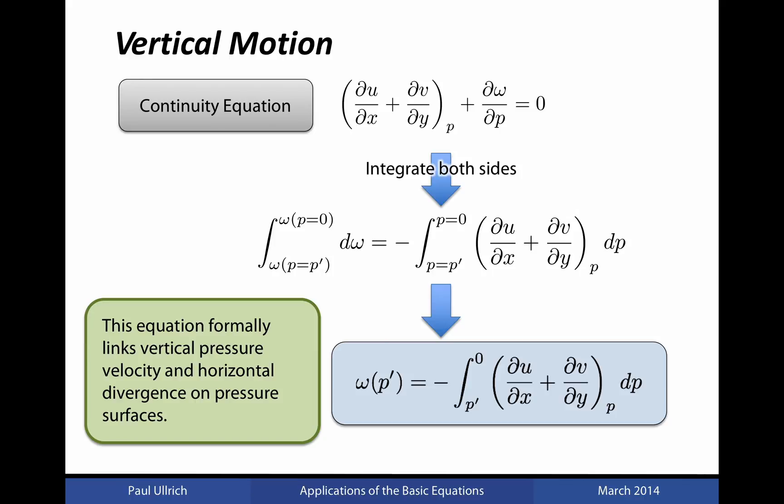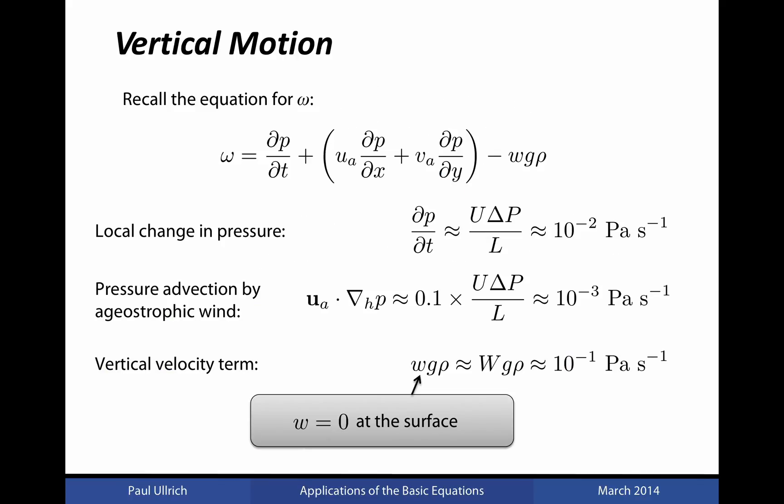The vertical pressure velocity at any particular pressure level p' is equal to the integral of the divergence above that level. Now let's consider what happens if we take p' to be the surface.